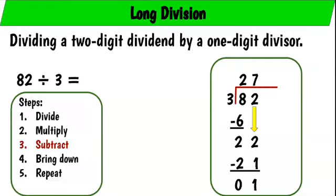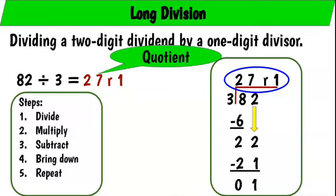So our problem ends here with our remainder 1. So our answer would be 27 remainder 1. That 27 remainder 1 would be our quotient.